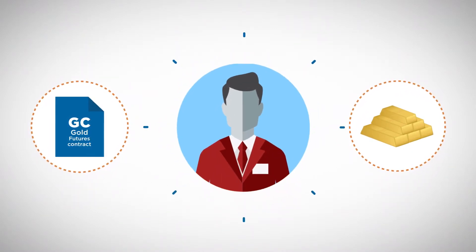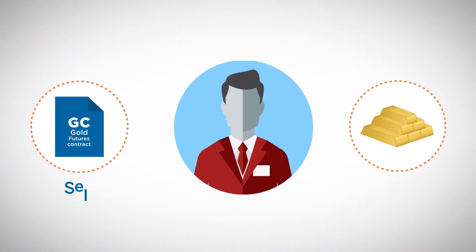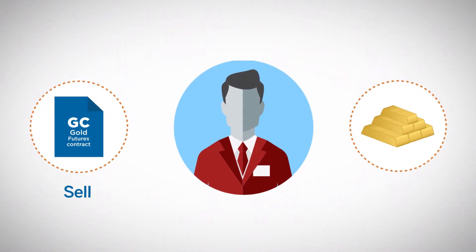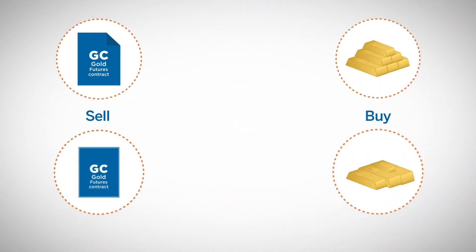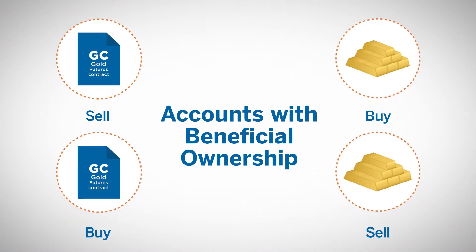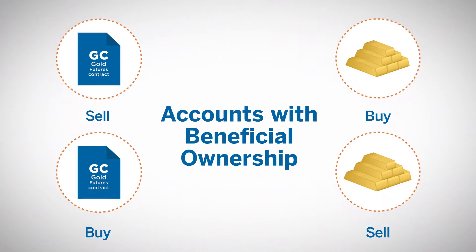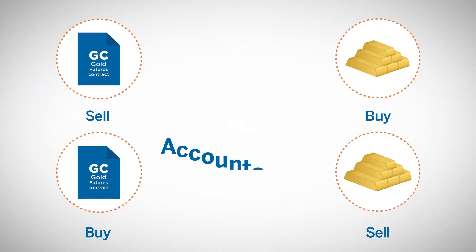Or, the other party to the EFRP must be the seller of the exchange contract and the buyer of, or long, the related position. This must result in the exchange contract and the corresponding related position being executed for accounts with the same beneficial ownership.